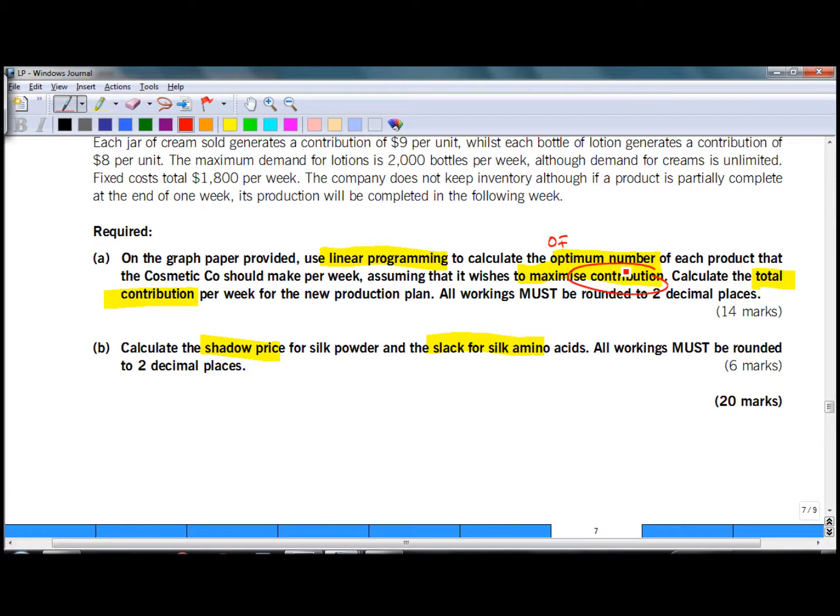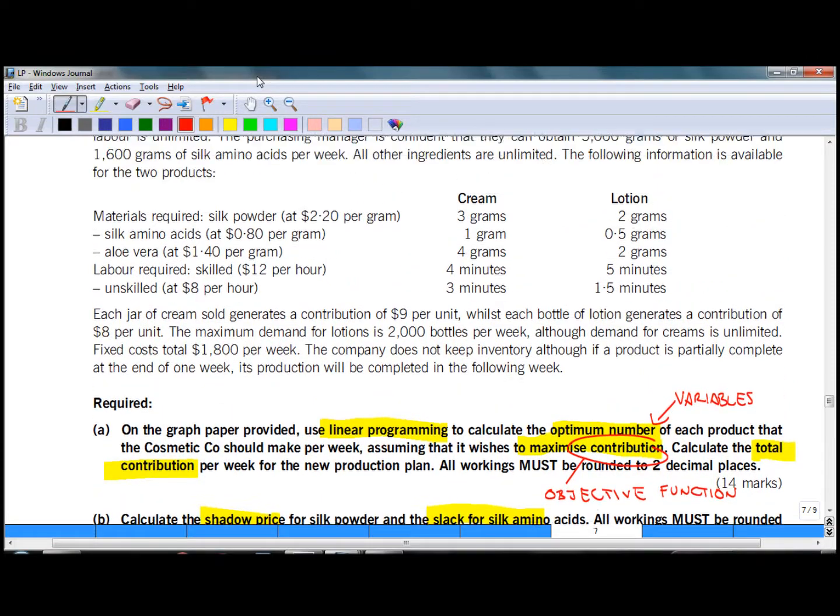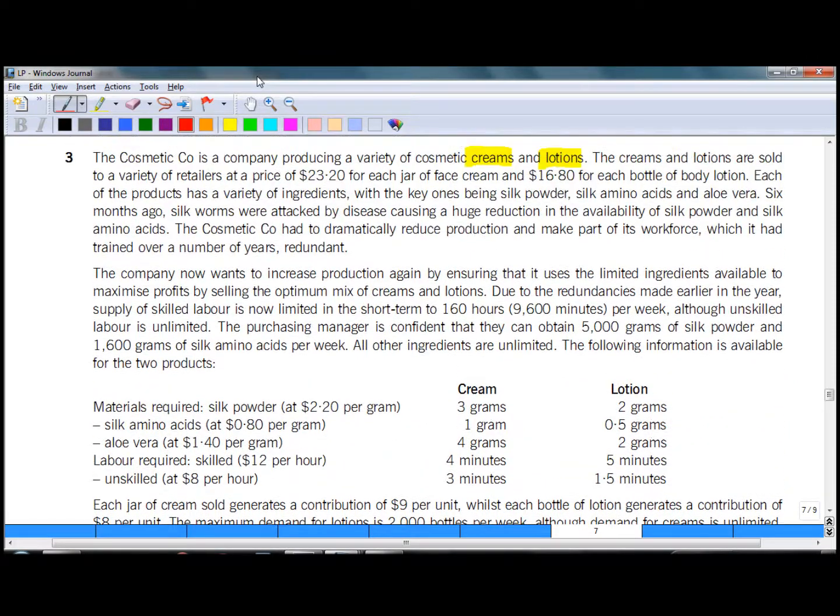The total contribution depends on the unit contribution and the number of units of each product produced. The number of units of each product produced are the variables. As we read through the question details, we need to identify information necessary for the objective function, which is unit contributions, and any other information necessary for identification of constraints. So let's continue reading the question details.